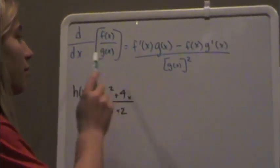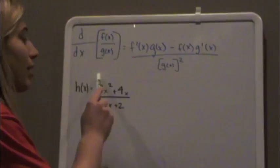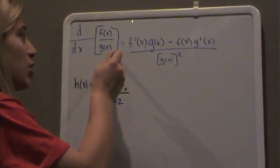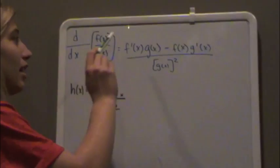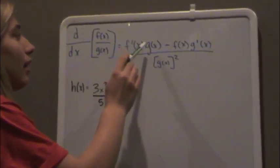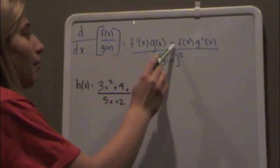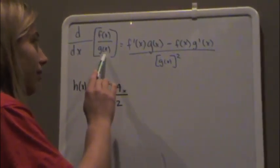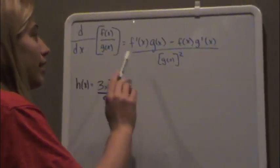So if you want to derive a problem that has a division in it, so f of x over g of x, if you want to derive that it would equal the derivative of the numerator times the denominator minus the numerator times the derivative of the denominator over the denominator squared.